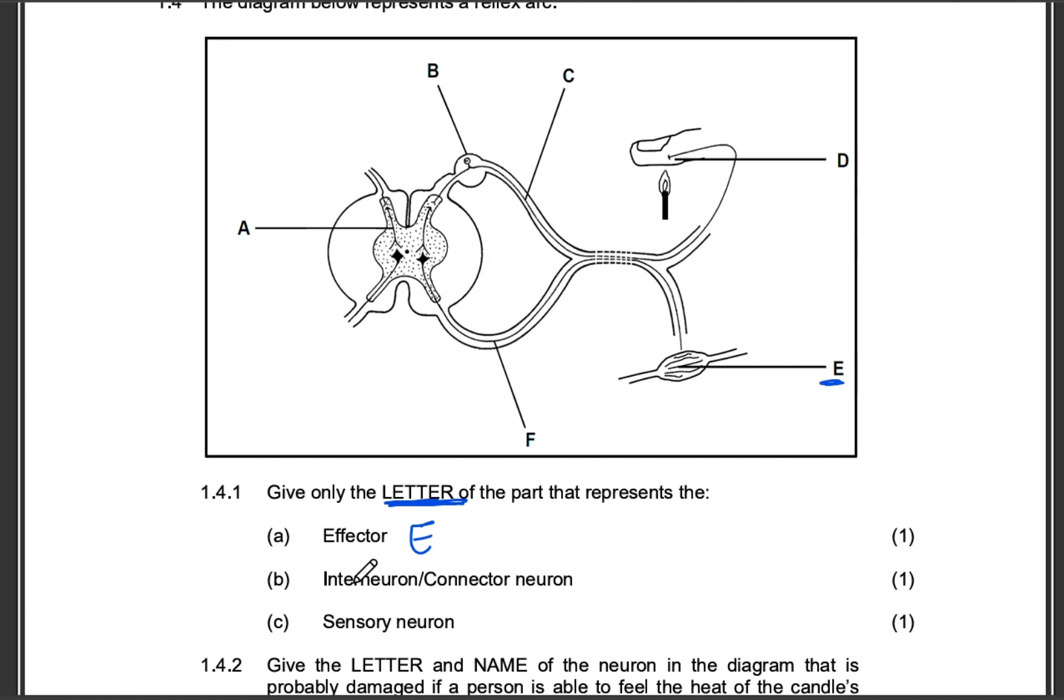Then letter of the interneuron. There is the interneuron. This is the interneuron. So letter A. Connector interneuron is the same thing. You find it in between the sensory and the motor neuron.